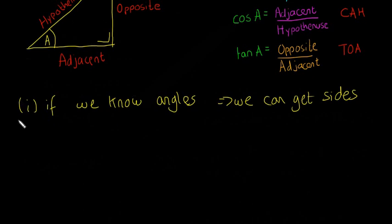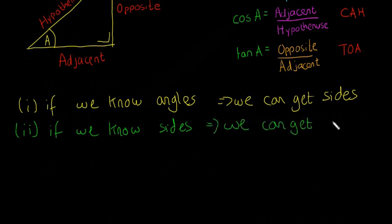The second reason: if we know sides, we can get angles. If we know all the sides, then we can find all the angles in the triangle as well. We're going to look at two examples - one to get a side and one to get an angle.